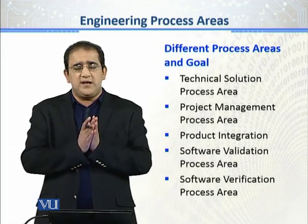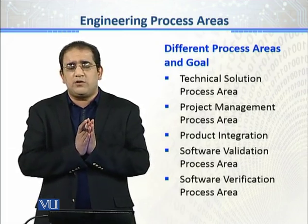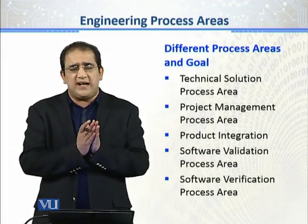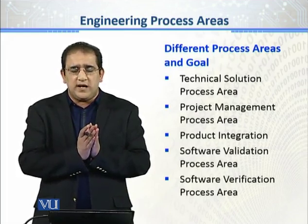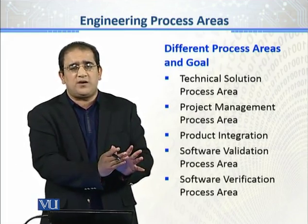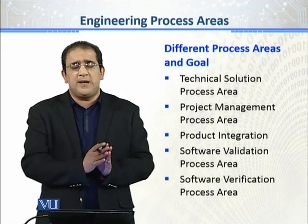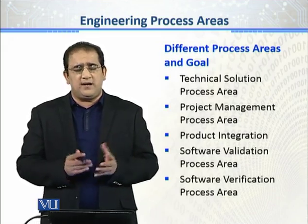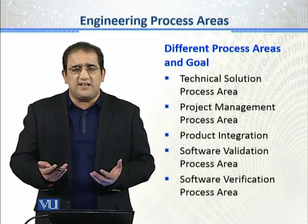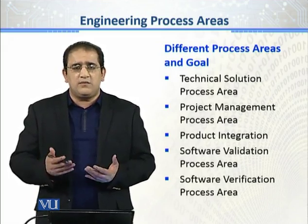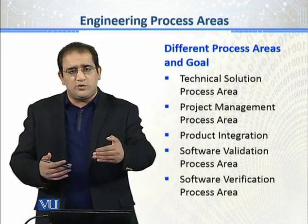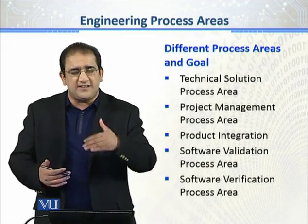To sum up, there are 6 process areas which we will discuss. We will start with requirement management — that's the core. We will try to remain as close as we can to the software engineering aspect of CMMI, because as mentioned earlier, there are a total of 22 process areas and every process area relates to some goals and specific practices.